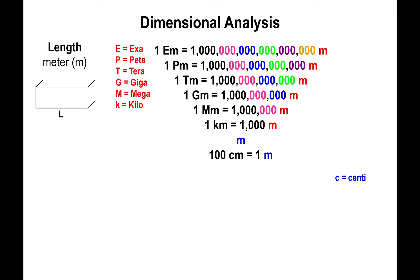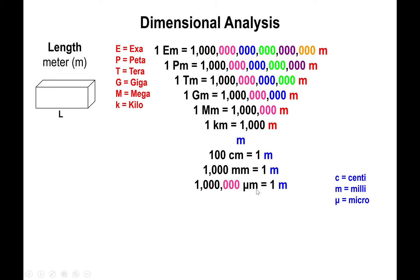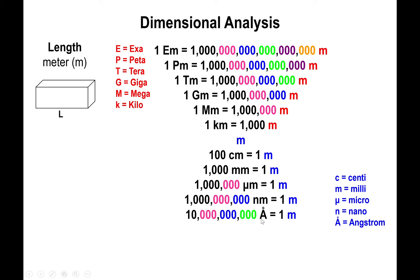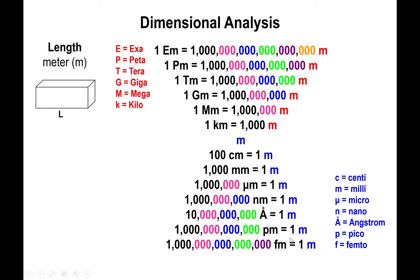We could also go into the small segment, where everything with the prefix will be smaller than the meter. If we have a hundred tiny things within the meter, we're talking about the centi. A thousand gives us the millimeter, a million gives us the micrometer, a billion gives us the nanometer. Ten billion angstroms is associated with the meter, and then we have one trillion picometers and one quadrillion femtometers in one meter.